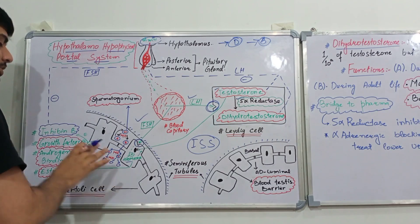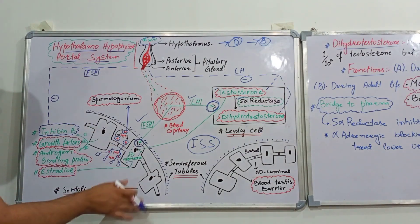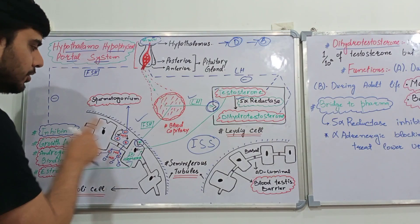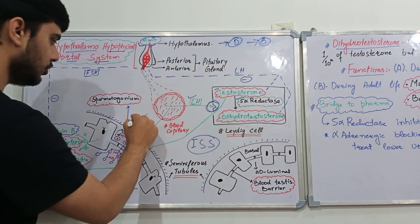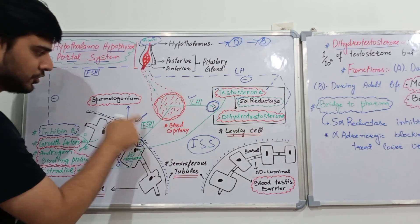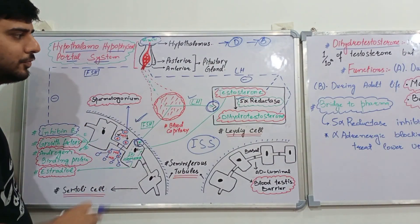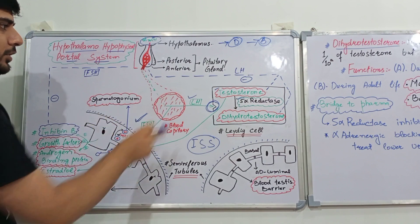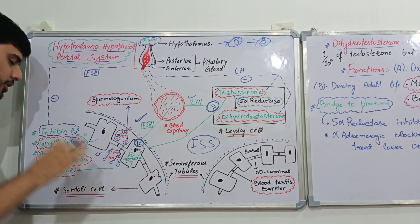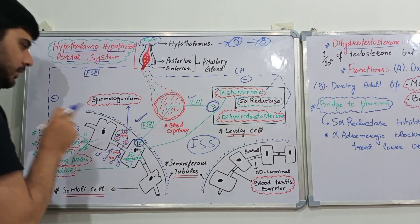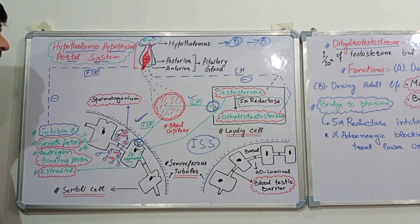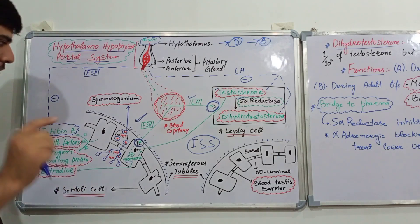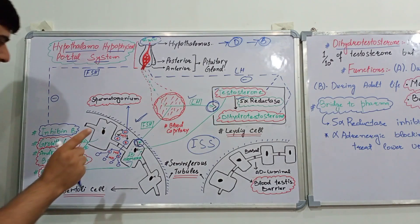Now we will discuss the Sertoli cells. As mentioned, the Sertoli cells line the seminiferous tubules. The Sertoli cells are stimulated by two important hormones: one is the follicle-stimulating hormone, which has a surface receptor on the Sertoli cell, and the other is testosterone, which has a nuclear receptor because testosterone is a steroid hormone. So the receptor for testosterone is present on the nucleus of the Sertoli cells — this is a commonly tested point; the nuclear receptor is for testosterone, not FSH.